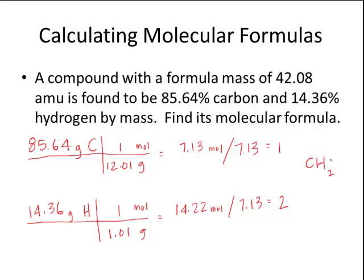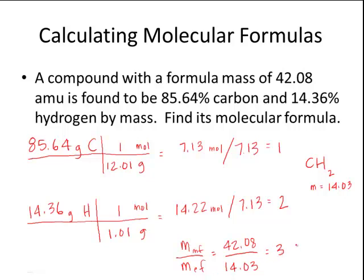This problem asks for the molecular formula, so we continue with more steps. The mass of the empirical formula CH₂ is 14.03. We then compare the molecular formula mass given in the problem — 42.08 — to the empirical formula mass of 14.03. Dividing 42.08 by 14.03 gives 3. Multiplying the empirical formula by 3 gives a final molecular formula of C₃H₆.